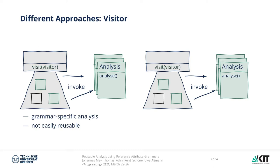First, we see a typical option using a visitor. The structure on the left is supposed to represent an abstract syntax tree of the language we want to analyze; next to it on the right is the analysis functionality. In a visitor, the analysis is invoked for the elements of interest in the AST. So it is specific to the types of the grammar and thus not easily reusable.